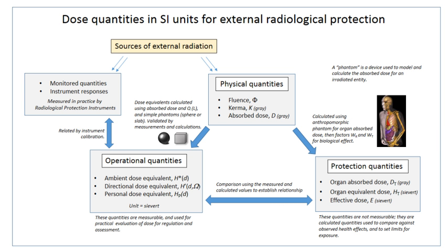The absorbed dose is a physical dose quantity representing the mean energy imparted to matter per unit mass by ionizing radiation. In the SI system of units, the unit of measure is joules per kilogram, and its special name is the gray. The non-SI CGS unit rad is sometimes also used, predominantly in the USA. To represent stochastic risk, the equivalent dose HT and effective dose E are used, and appropriate dose factors and coefficients are used to calculate these from the absorbed dose. Equivalent and effective dose quantities are expressed in units of the sievert or REM, which implies that biological effects have been taken into account, in accordance with recommendations of the ICRP and ICRU.